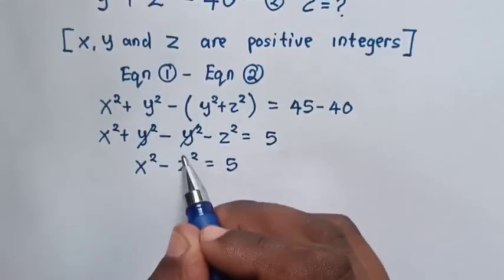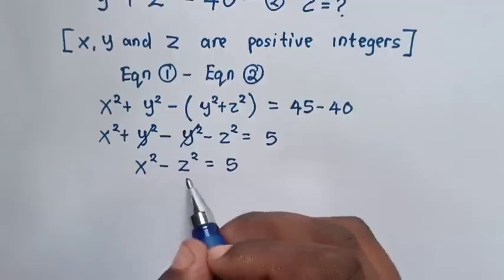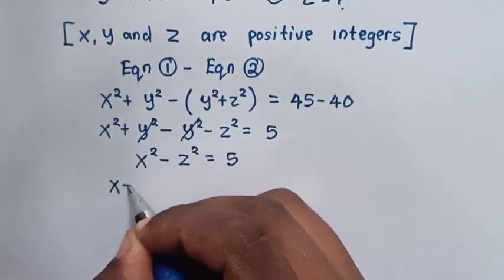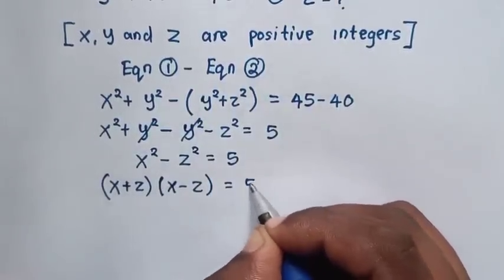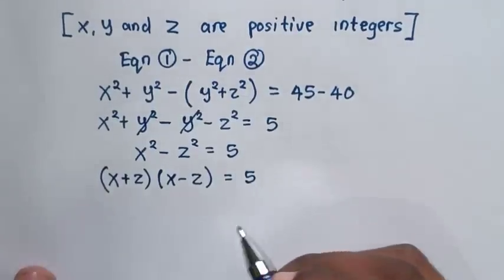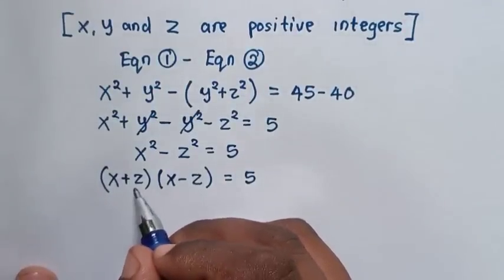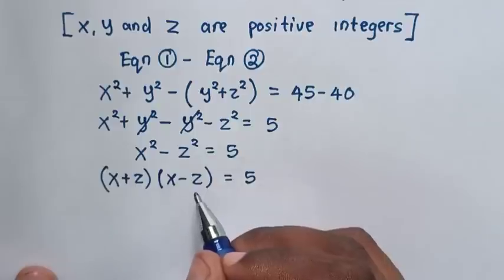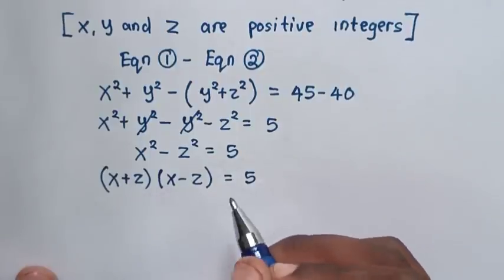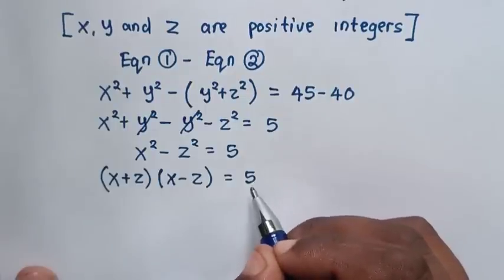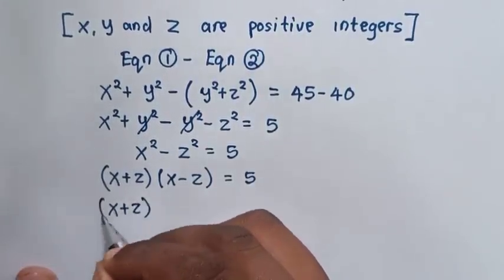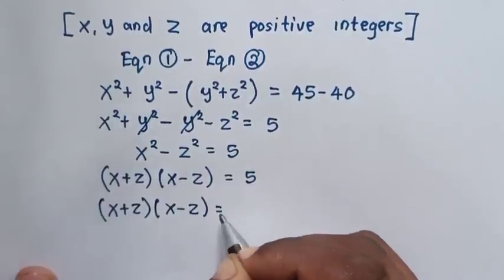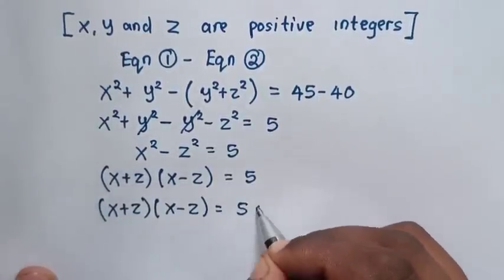Then, this is a difference of two perfect squares, so it can be written in factored form: x plus z, in brackets, times x minus z is equal to 5. Since 5 is prime, the only possibility is 5 times 1. So here it will be x plus z times x minus z is equal to 5 times 1.